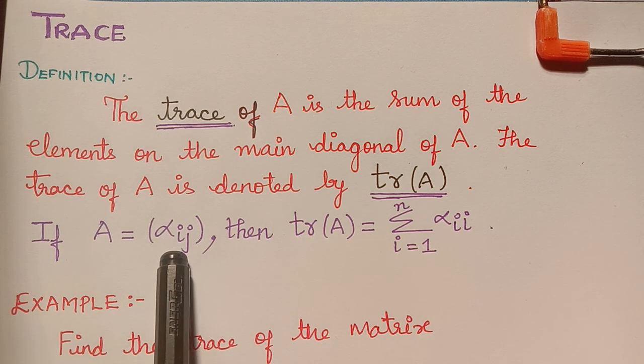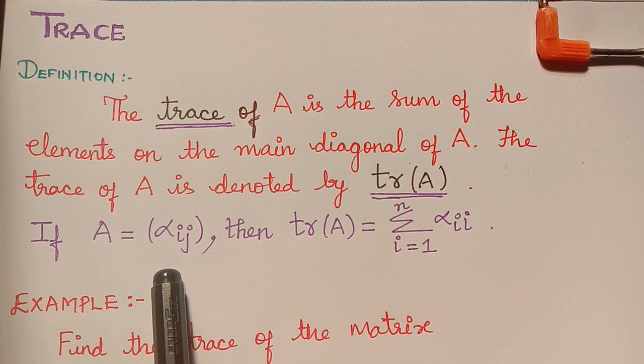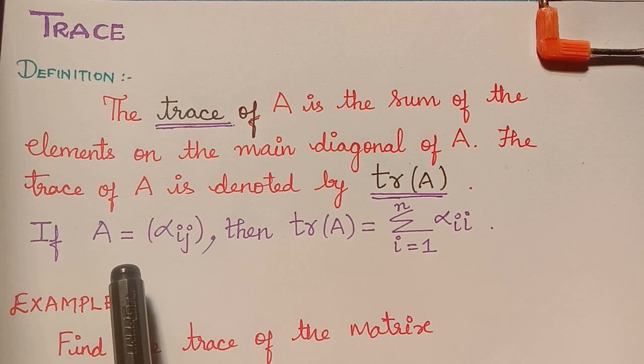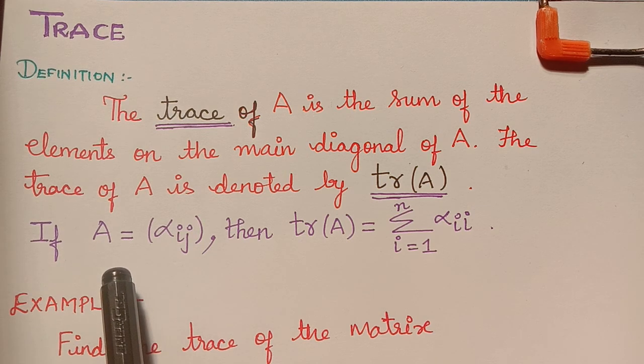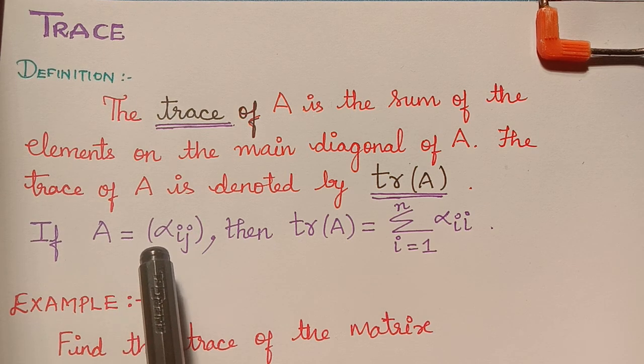All the diagonal elements will be alpha_ii, that is alpha_11, alpha_22, alpha_33, etc., up to alpha_nn.